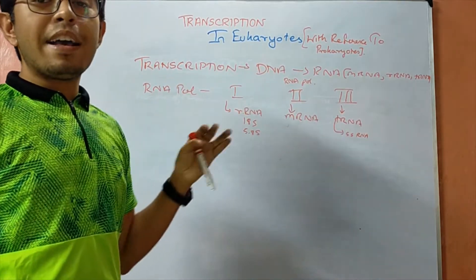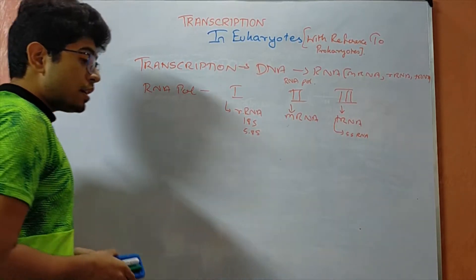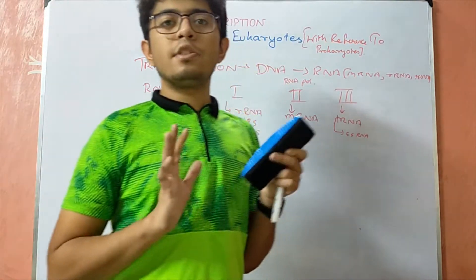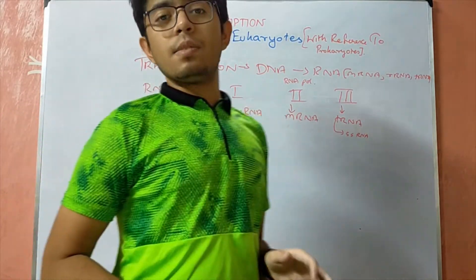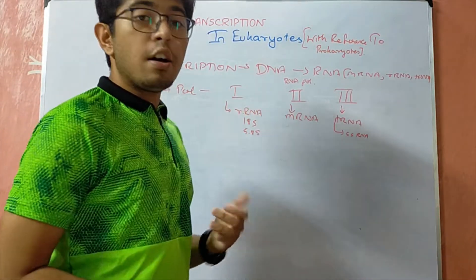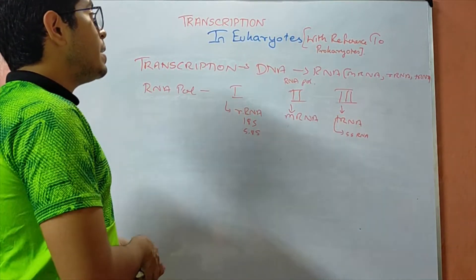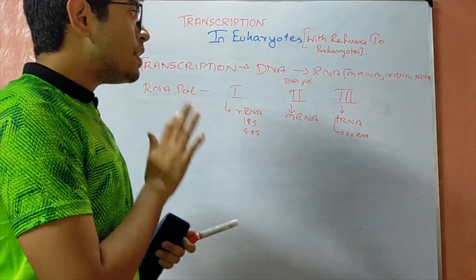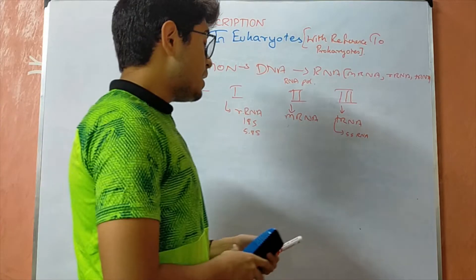One more thing to be kept in mind is that the process of transcription in the case of eukaryotes takes place inside the nucleus, unlike prokaryotes where it takes place in the cytoplasm. So the transcription process in eukaryotes takes place inside the nucleus.